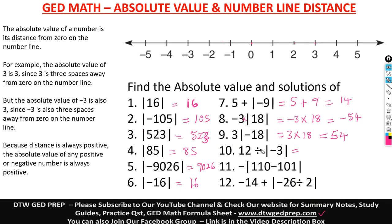Here it says 12 divided by the absolute value of negative 3. The absolute value of negative 3 is a positive 3. So that's 12 divided by 3, and our answer is 4.